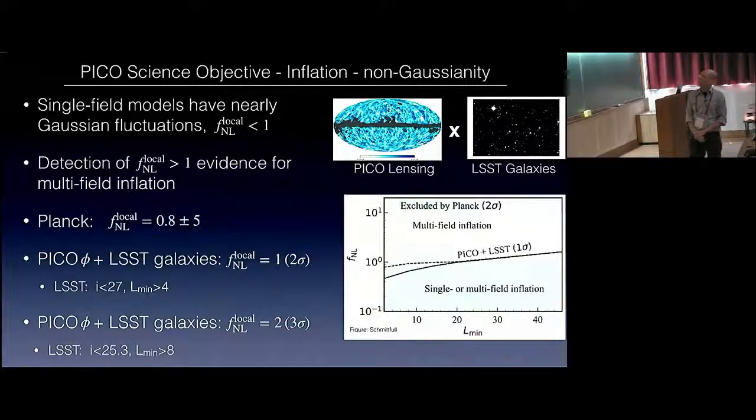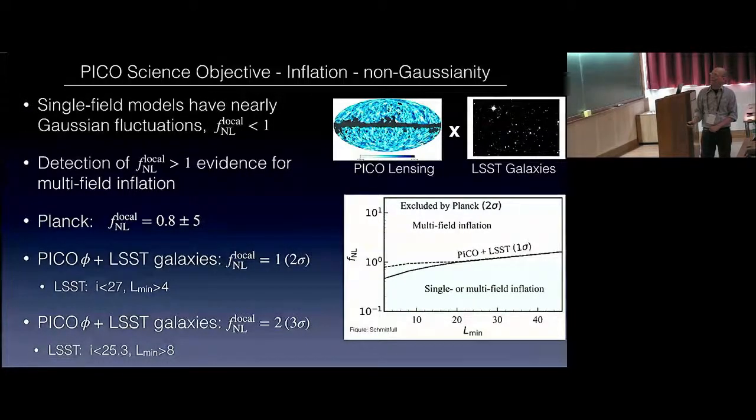One more word about non-Gaussianity, and how it relates to inflation. Single field models have nearly Gaussian fluctuations with f_NL, a measure of non-Gaussianity, smaller than one. Multi-field inflation should have f_NL larger than one. So a detection of f_NL larger than one is evidence for multi-field inflation. By correlating the Pico lensing, here I'm showing the Planck lensing, but I'll talk about the Pico lensing map in a moment.